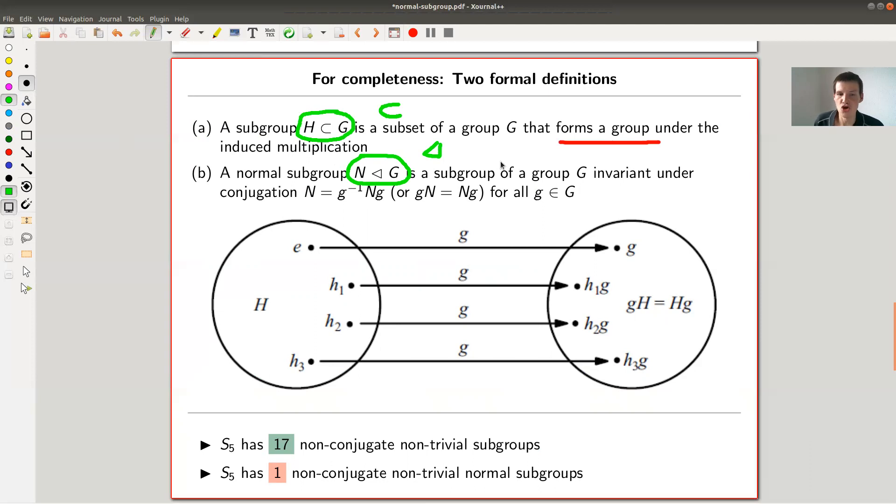So a subgroup is exactly what you think it is. It's a subset that is compatible with the induced multiplication in the sense that it again forms a group. Not very exciting. A normal subgroup, and note the difference between the notation, normal subgroups usually are denoted by this triangle symbol while subgroups are just denoted by the usual inclusion. Anyway, a normal subgroup is a subgroup which is invariant under conjugation, and invariant under conjugation is exactly what I said.